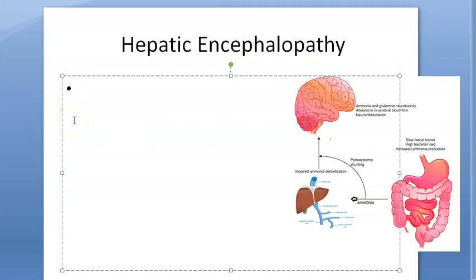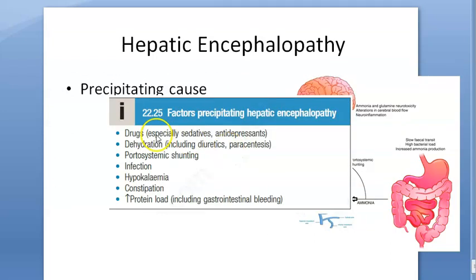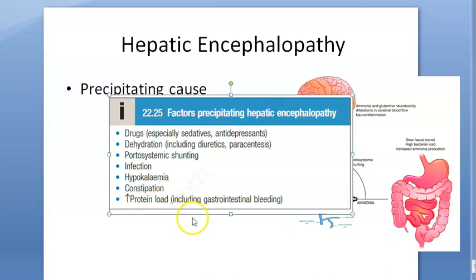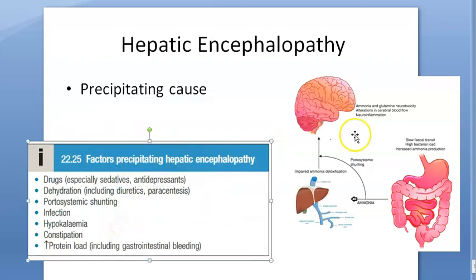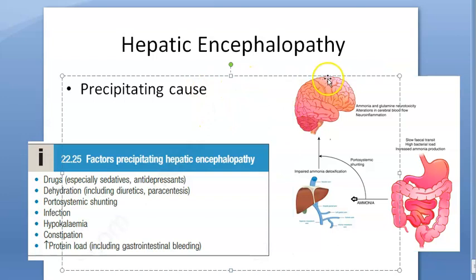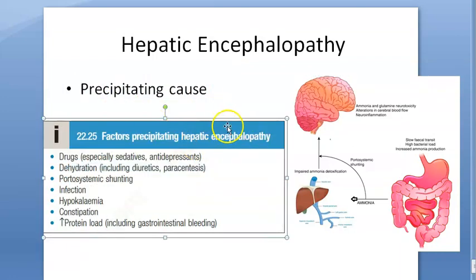Hepatic encephalopathy can have precipitating causes. Drugs the patient is taking, like sedatives, will worsen sedation. Other precipitating causes include dehydration, portosystemic shunting, infection, hypokalemia, constipation, and increased protein overload — protein overload is a bad thing in these people, as it raises ammonia and amino acid levels.